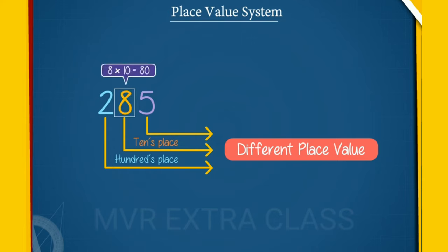Next is the ones place, only 5. So the place value of 5 is 5 into 1, which equals 5.